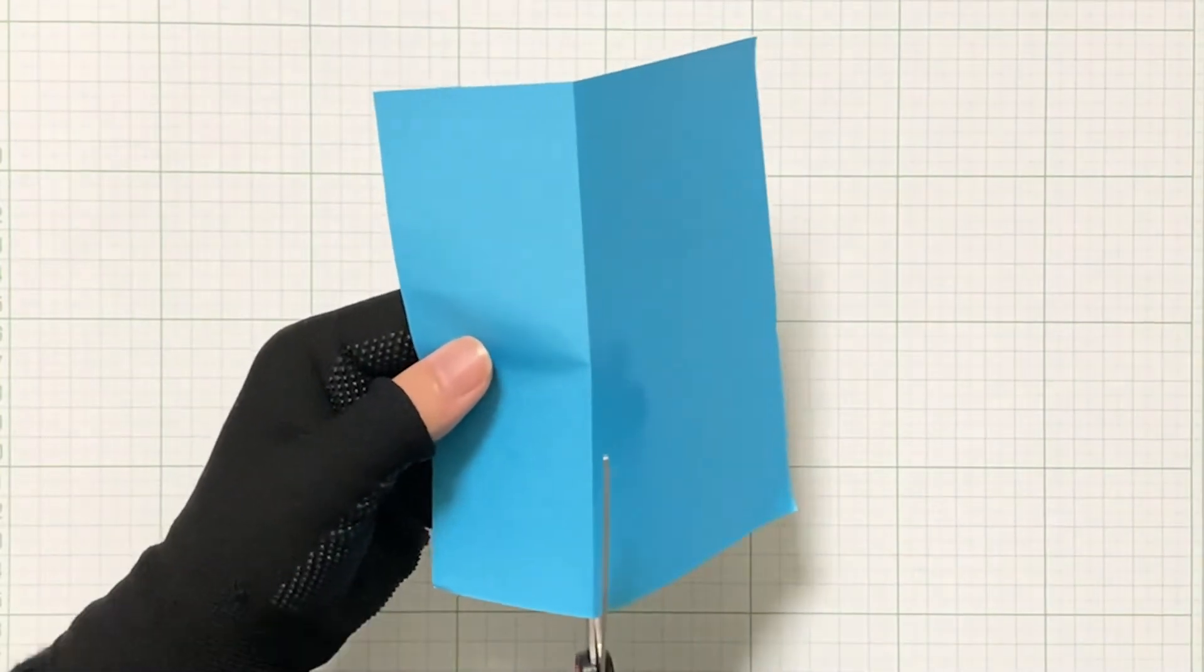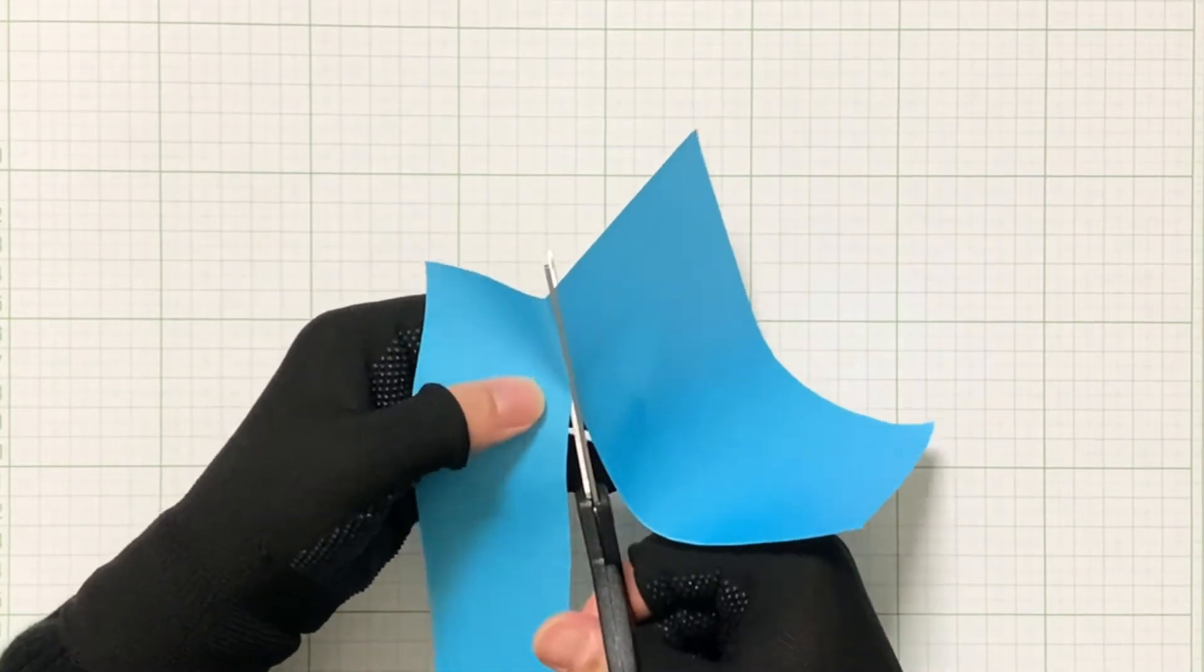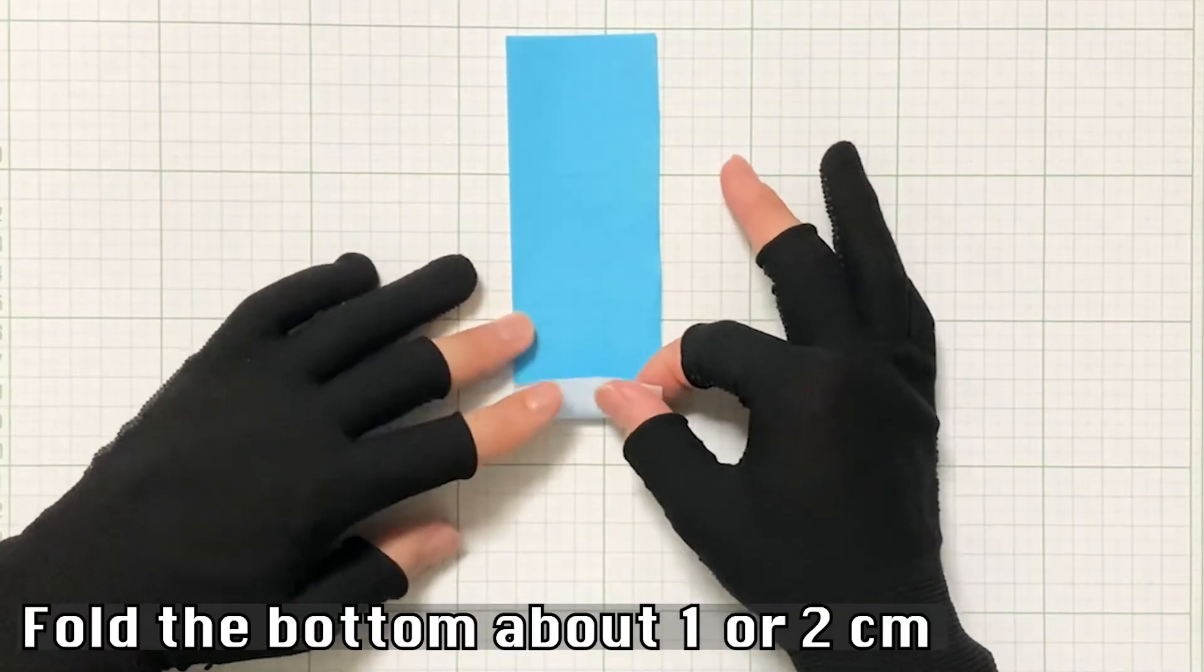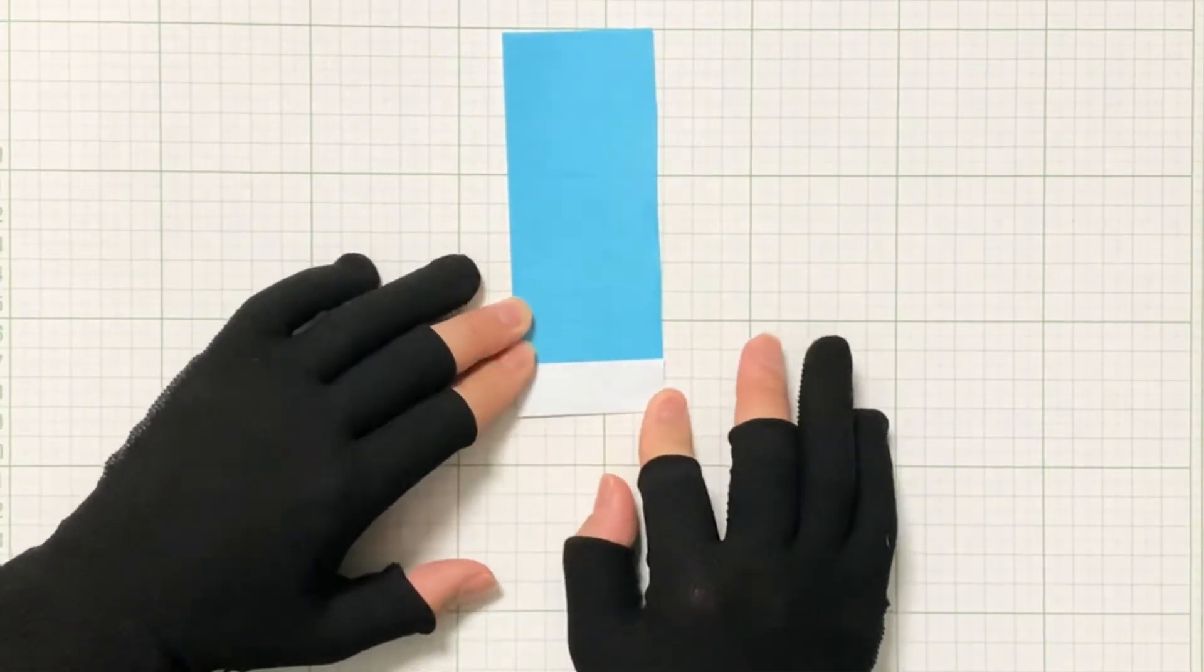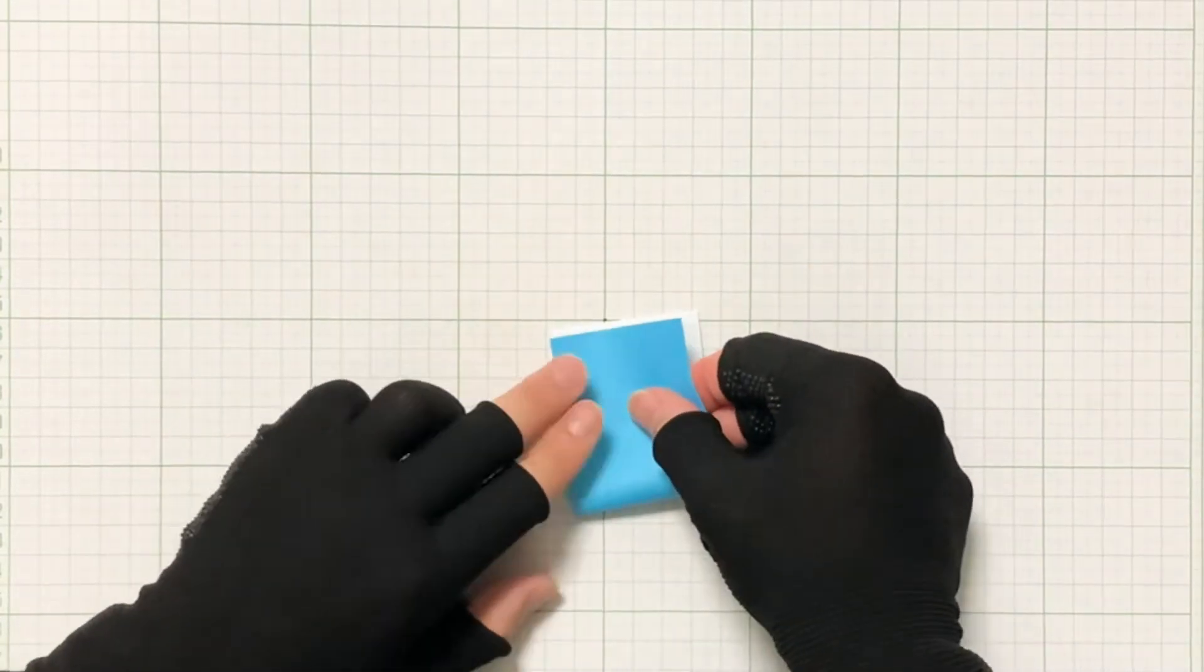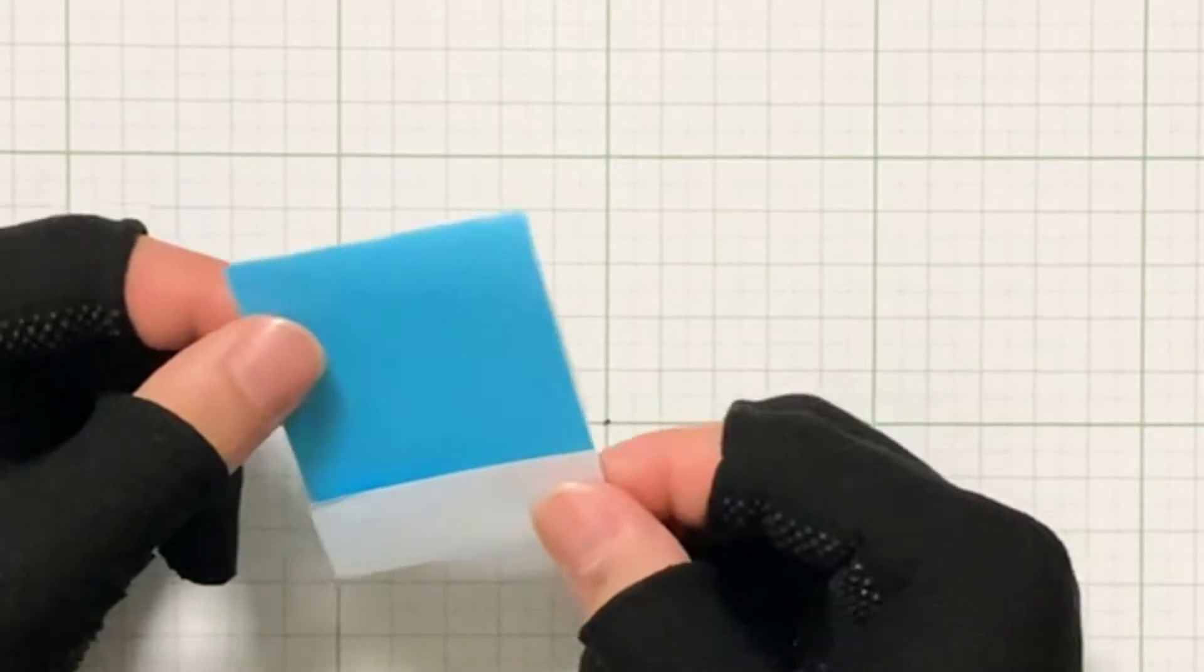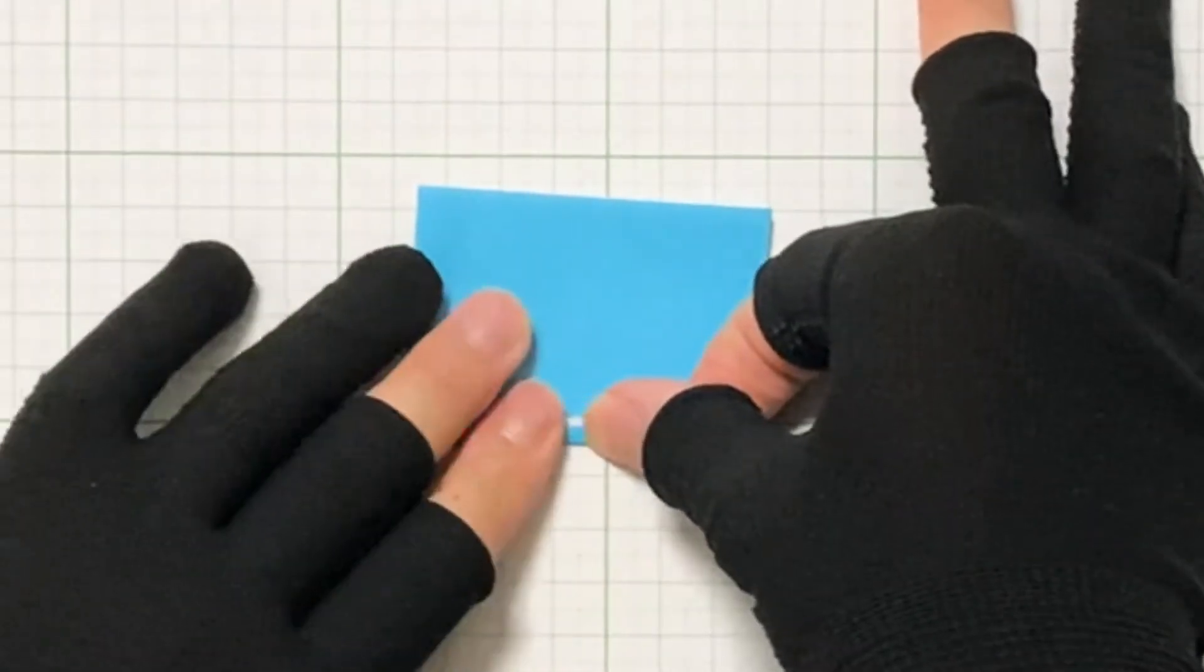Let's cut it out. Fold the bottom about one or two centimeters. Then, flip it over and fold it in half. Roll it up like this.